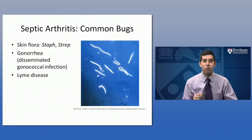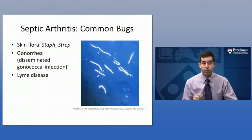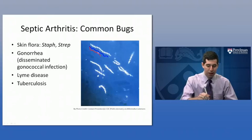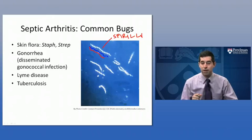Lyme disease — we all know the stereotypical bullseye rash — but longer term, people with Lyme disease can end up with pretty significant joint pain. They often feel very significant fatigue and may have some effects on their heart as well, leading to what's called heart block, an abnormal heart rhythm. Lyme disease is caused by a spirilli — essentially spiral-shaped — bacteria called Borrelia burgdorferi, originally described in East Lyme, Connecticut, which is how Lyme disease gets its name.